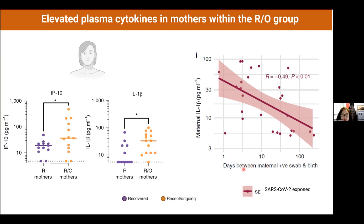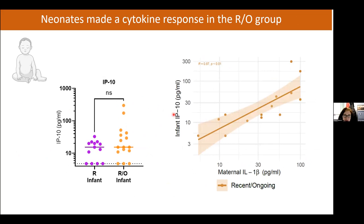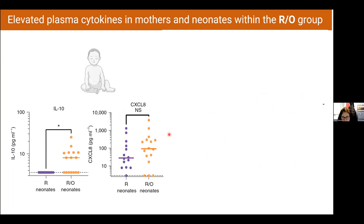In infants, IP-10 was marginally elevated and correlated with maternal IL-1β, though some cytokines do cross the placenta so this may not reflect the infant's own response. However, some cytokines detected in infants were clearly made by the baby itself. IL-10, an anti-inflammatory cytokine, was elevated in babies born to mothers with concurrent infection, suggesting the baby was attempting an anti-inflammatory response. IL-8 was also elevated in those infants.